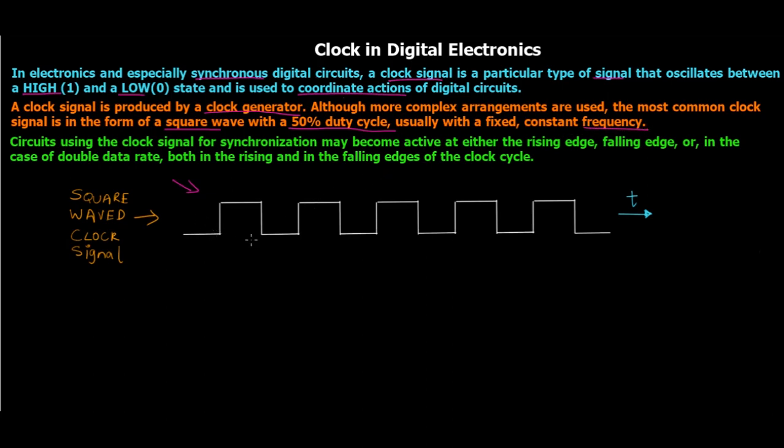So frequency is 1 by t and t is the time period. So in this example you can see that this is going to be the time period. Time period is the time required for the signal to complete one cycle. So from low to high. So this is going to be the time period and frequency is equal to 1 by t. So this concept is something that you already must be knowing in physics and in other science subjects.